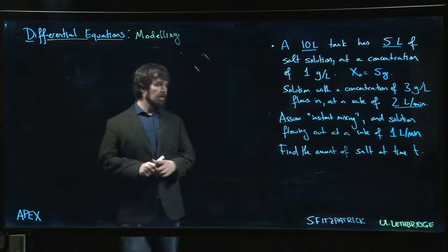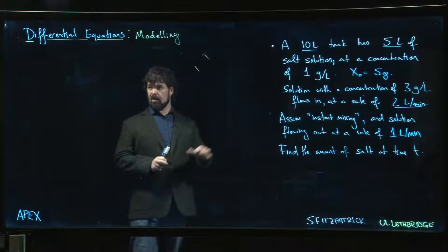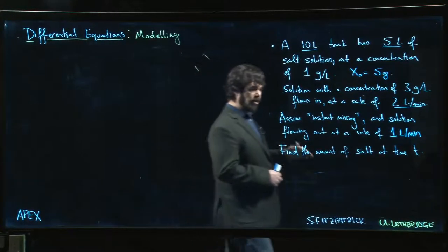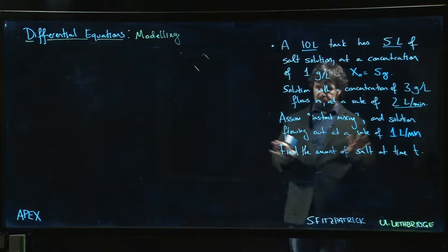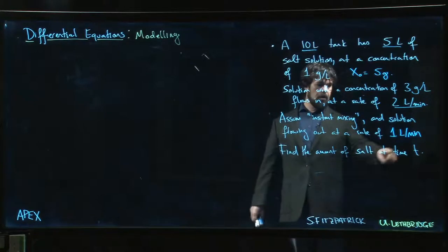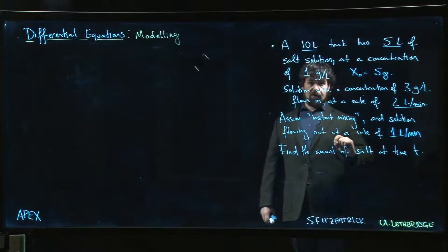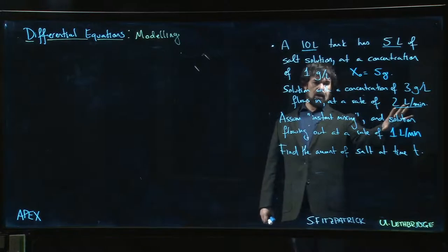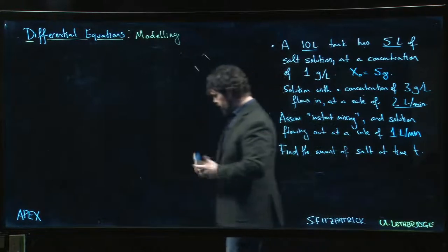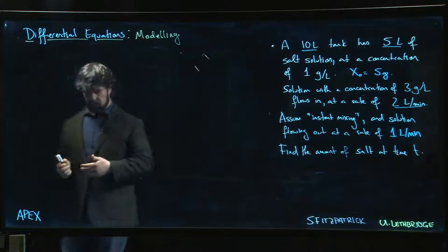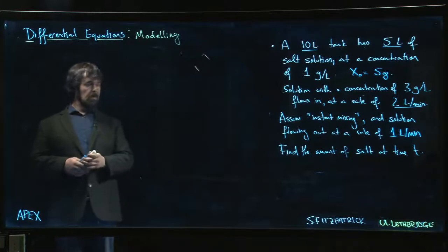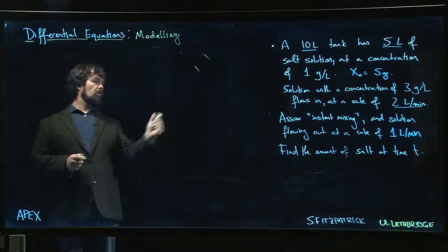Alright, so here's our last example. This is a slightly more complicated scenario. We still assume instant mixing because we can't solve without it, but now we're going to use different flow rates. The flow in and the flow out are going to be different values, and we have to figure out what's going to go on with that.